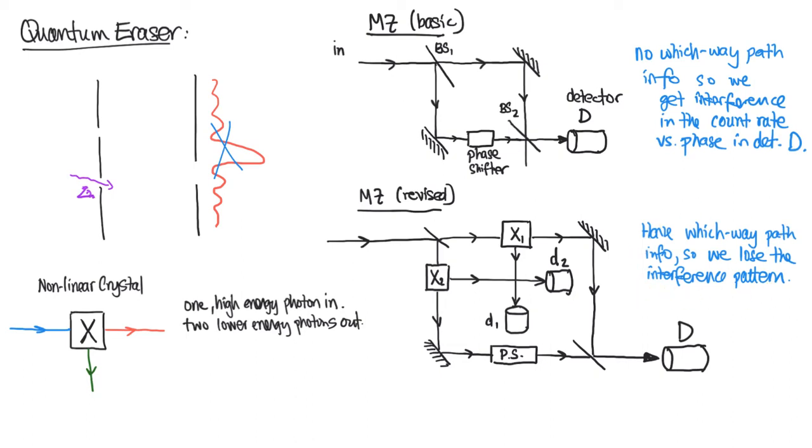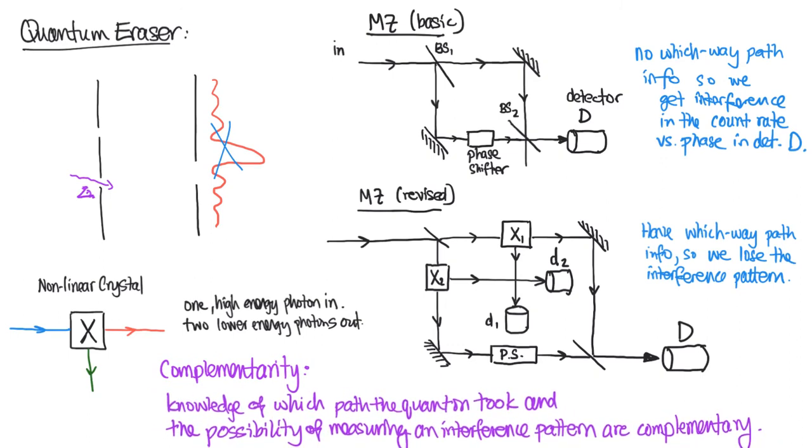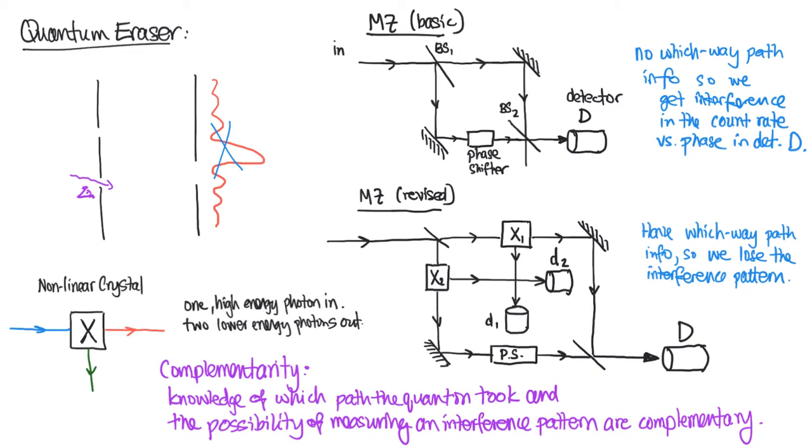This phenomenon of trading which way path information for interference is often referred to as complementarity. In this case we have two features: knowledge of which path the quanton took and the possibility of measuring an interference pattern. Those are complementary with each other. If you have one you cannot have the other.